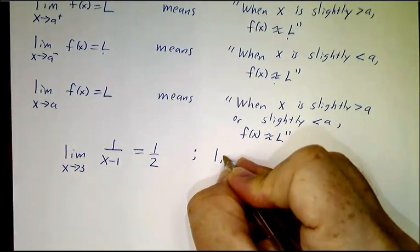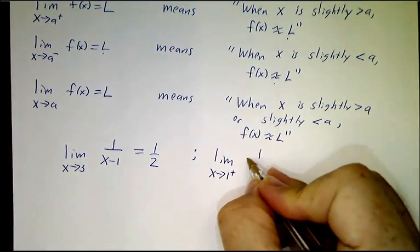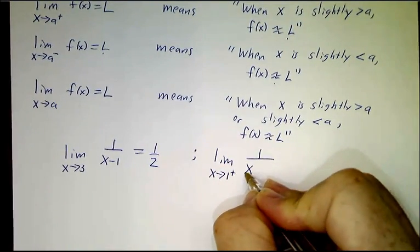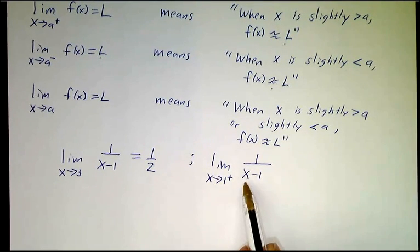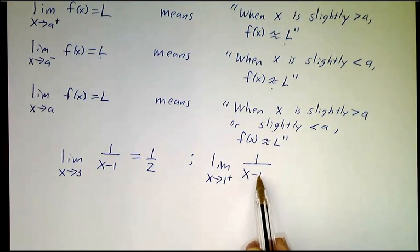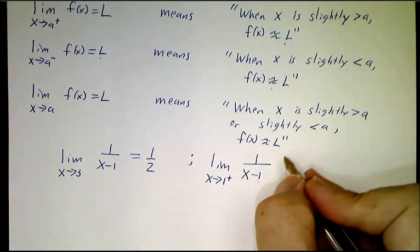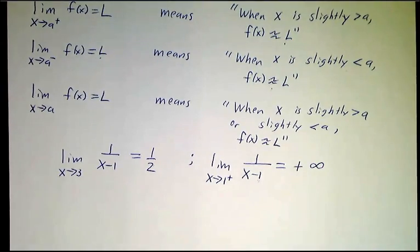But what do I mean if I write the limit as x approaches 1 from above of 1 over x minus 1? We're talking about what happens when x is slightly bigger than 1. If x is slightly bigger than 1, x minus 1 is slightly bigger than 0. So we get 1 divided by a tiny positive number, and that gives us a huge positive number. Our notation for that is that the limit is plus infinity.